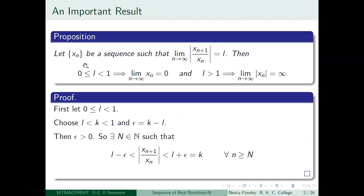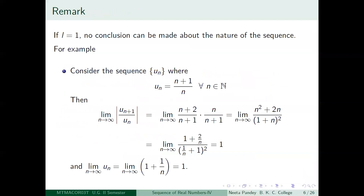To summarize the result: if limit of |Xn+1/Xn| = L, then if 0 ≤ L < 1, Xn is a null sequence; if L > 1, |Xn| is properly divergent to infinity. There is no mention of what happens when L = 1, because no conclusion can be made. To understand this, let us look at several examples.